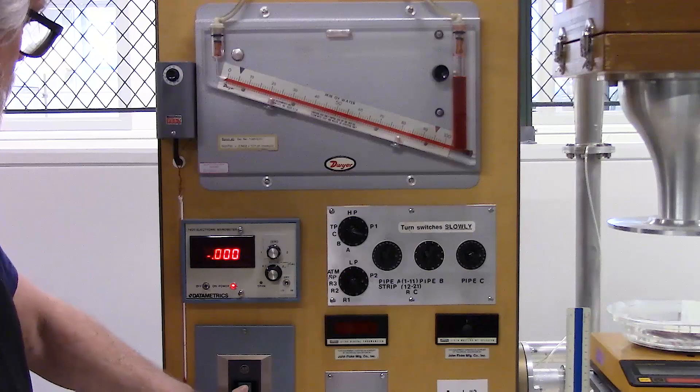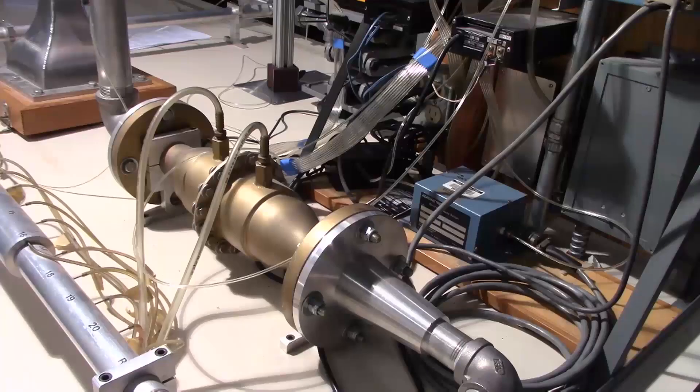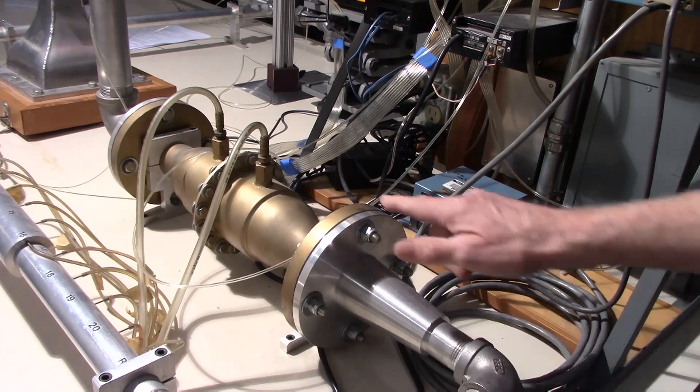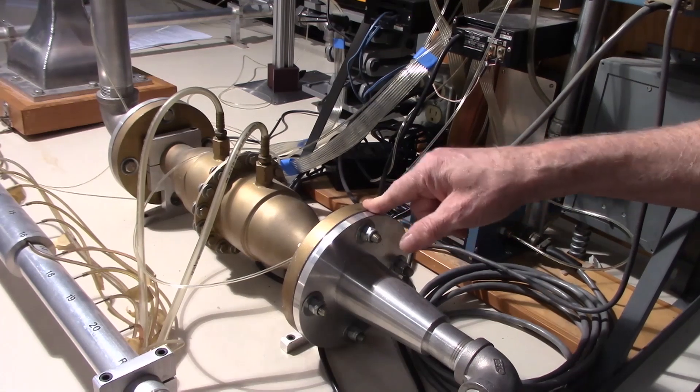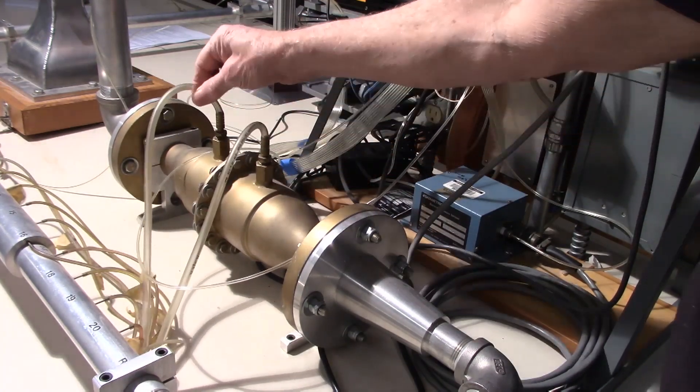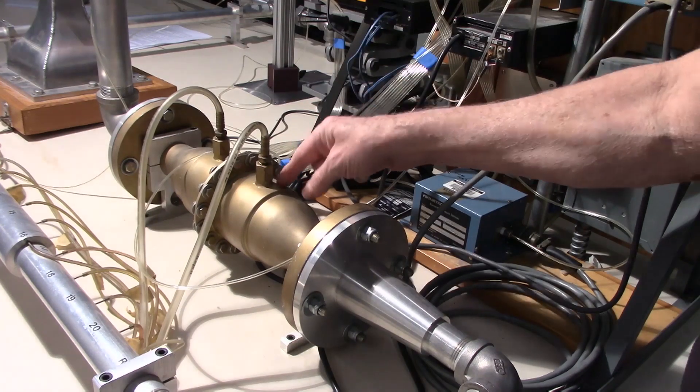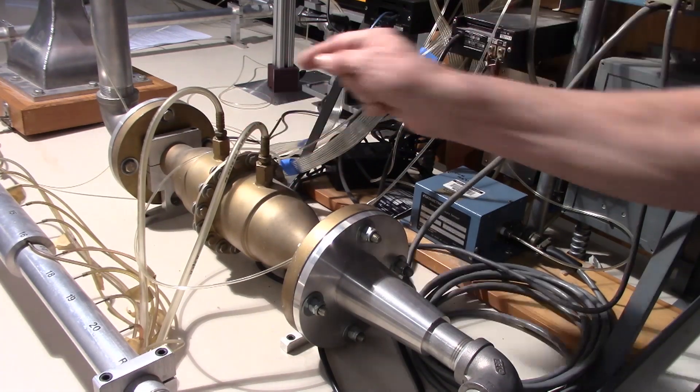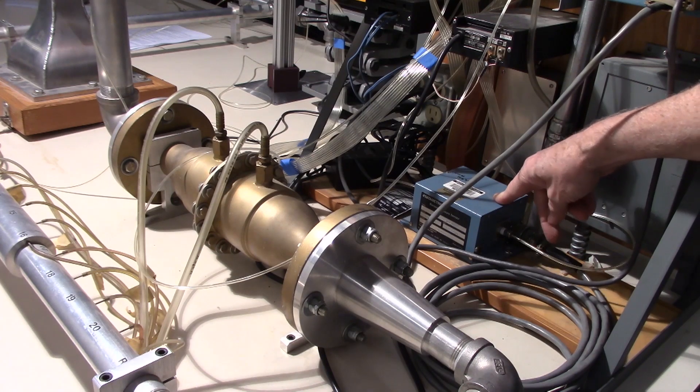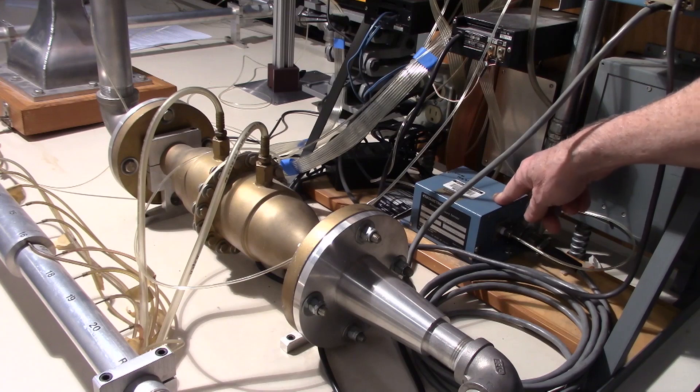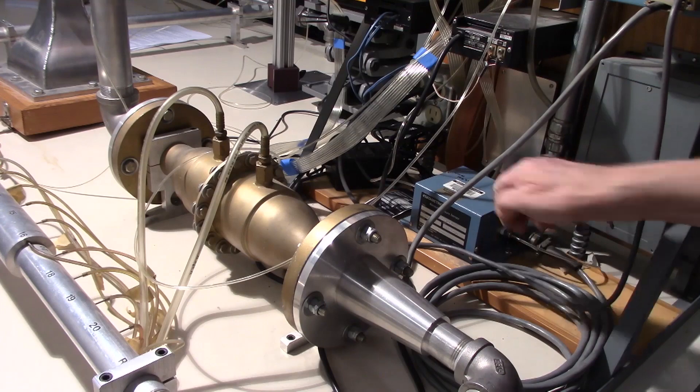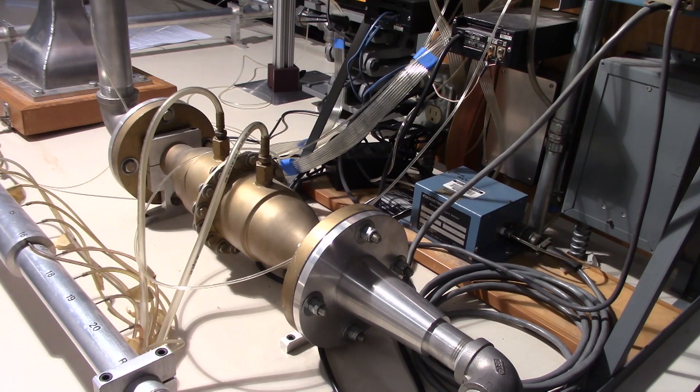We can turn on our compressor using this switch here. Here's a look behind the instrument panel. You can see our flow is routed through this calibrated laminar flow element here. These are the taps that go up to our inclined manometer on either side. This is the high pressure side and the low pressure side. Over here is the differential pressure transducer that we read our pitot tube with. This is the low pressure tap and the high pressure tap. These are both routed to the high pressure and low pressure switches on the front of the control panel.